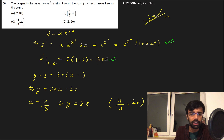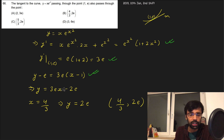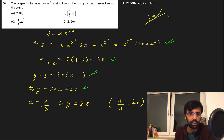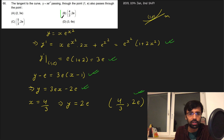Now the tangent passes through (1, e) with slope 3e. Equation: y - e = 3e(x - 1), which simplifies to y = 3ex - 3e + e = 3ex - 2e. Now we check which option point satisfies this. If x = 4/3: y = 3e·(4/3) - 2e = 4e - 2e = 2e. So the point (4/3, 2e) lies on the tangent. That is the answer.